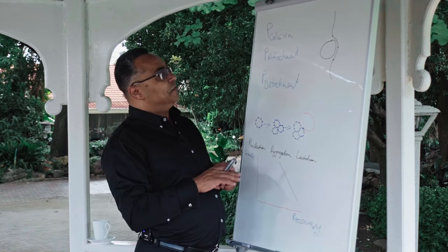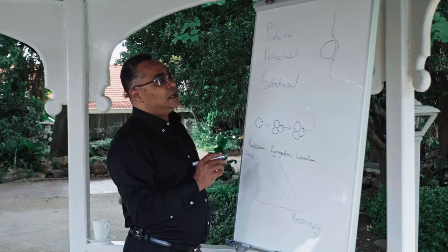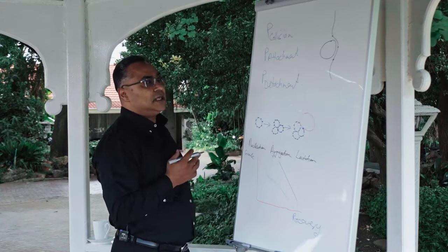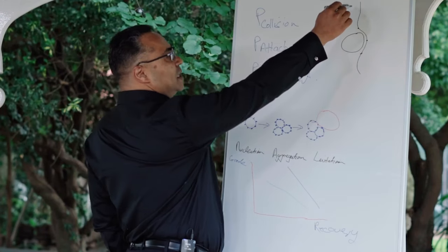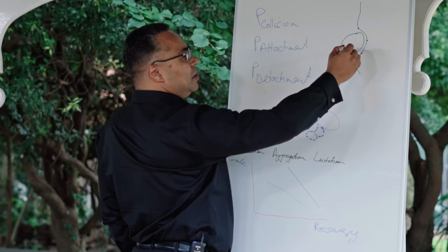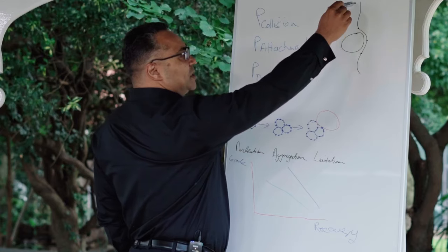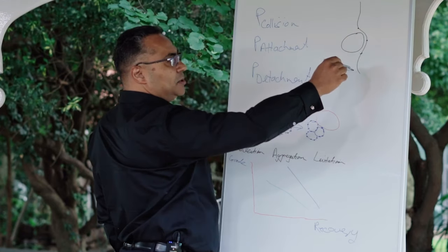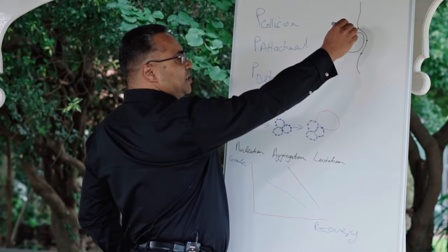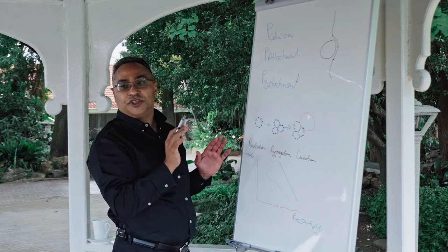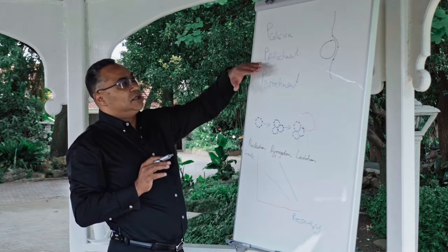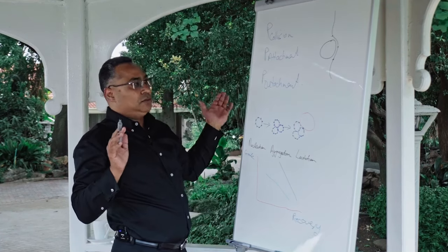Why is it difficult for a fine particle to attach to a bubble? Because of its low mass it has very low inertia, and it gets stuck in the streamline around the bubble. There's a rising bubble and a falling particle, and there's a water streamline around the bubble — it's almost like a surfer on a wave. The fine particle will just surf past that bubble, won't collide or touch it, so you won't get any collision, and if that doesn't happen, flotation is impossible.